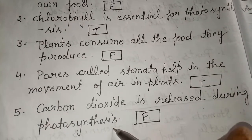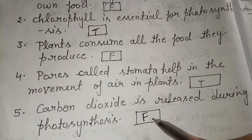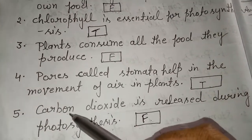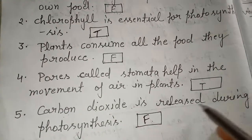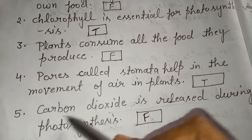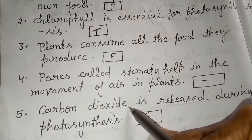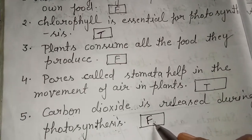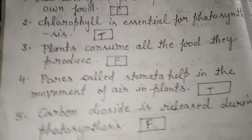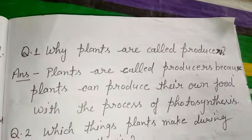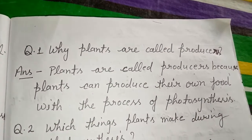Fifth question: carbon dioxide is released during photosynthesis. No, false — because oxygen is released during photosynthesis, not carbon dioxide. The statement says carbon dioxide, that's why it is false.